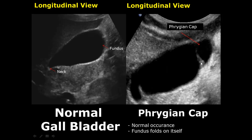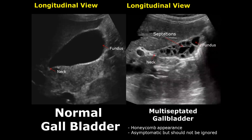The Phrygian cap is a normal occurrence in the gallbladder in which the fundus will fold on itself. It is not a disease but just an occurrence. A multi-septated gallbladder gives a honeycomb appearance with multiple septations inside the gallbladder. They are asymptomatic but should not be ignored because they may lead to malignancy.